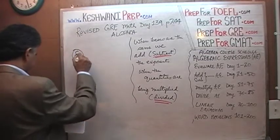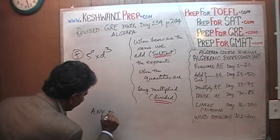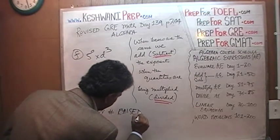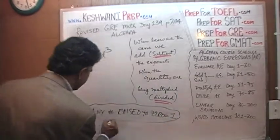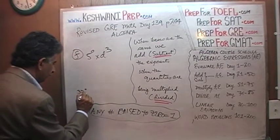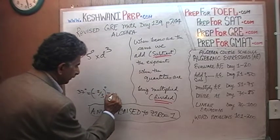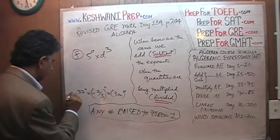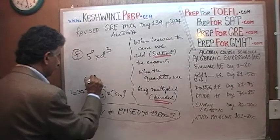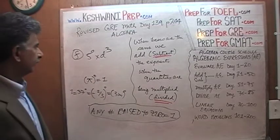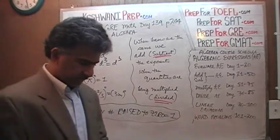Part F: 5 raised to 0 times D to the third. Any number raised to 0 equals 1 — this is something you must know. 37 raised to 0 equals 1, negative 2-thirds raised to 0 is 1, 3 million raised to 0 is 1. Everything is 1. So 5 raised to 0 is just 1 times D to the third, which is simply D to the third. That's the answer to F.